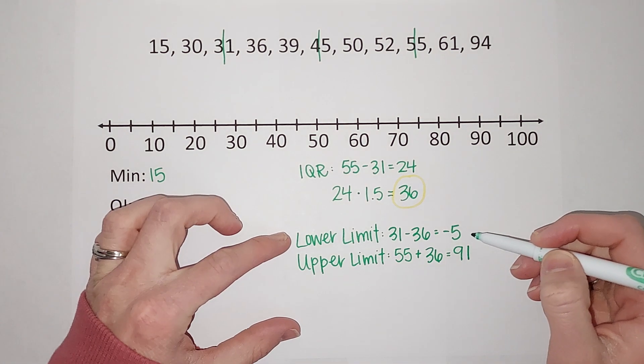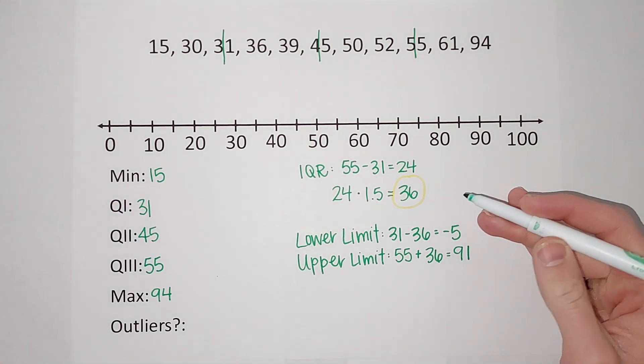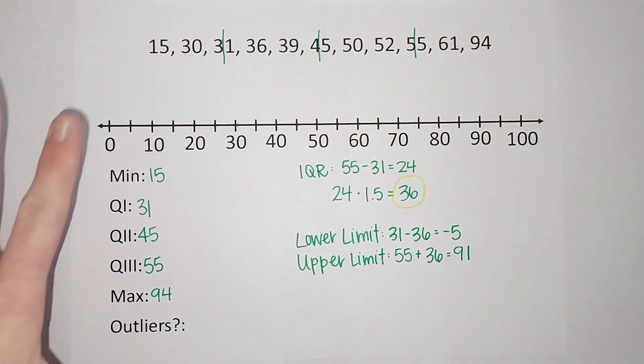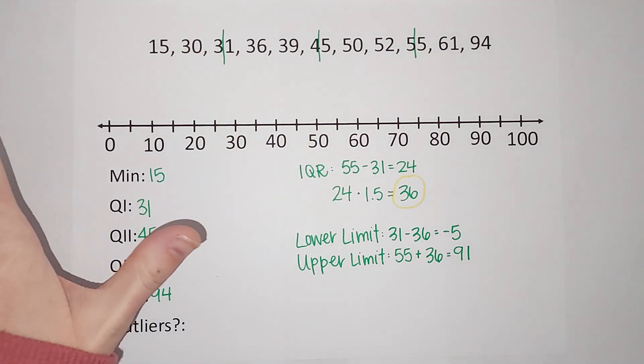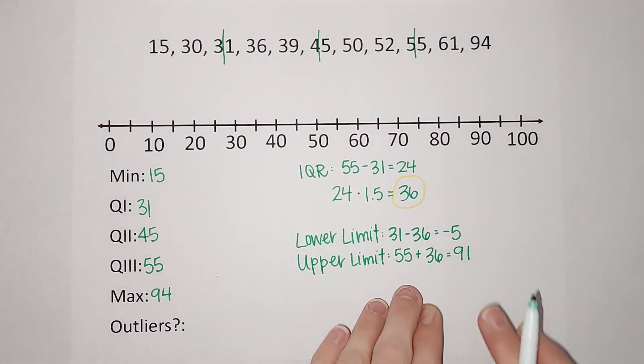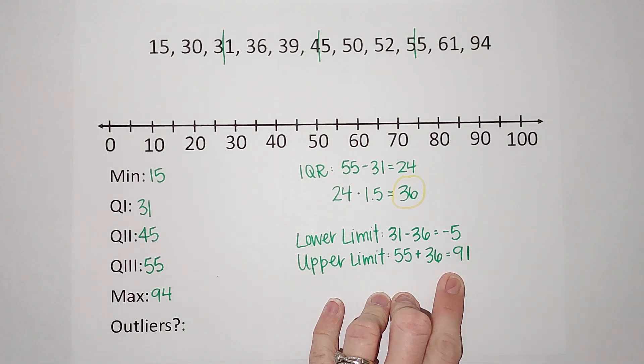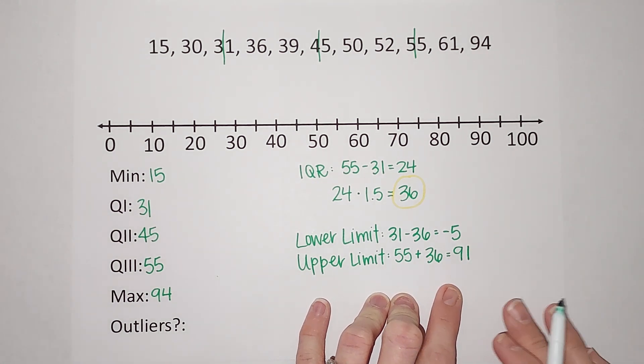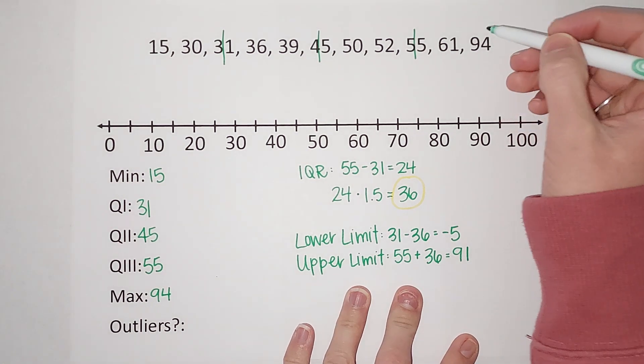My lower limit is negative 5, which means any data lower than negative 5 is considered an outlier. Obviously, all my numbers are positive, so there's no outliers on the lower end. For my upper limit, my upper limit is 91, so any number bigger than 91 is considered an outlier. So I do have one, which is 94.